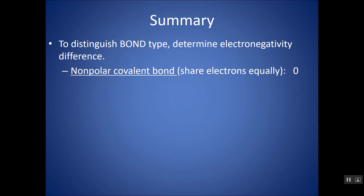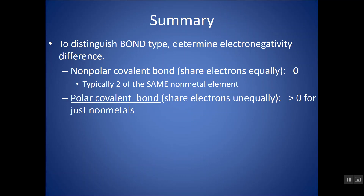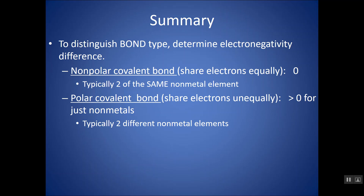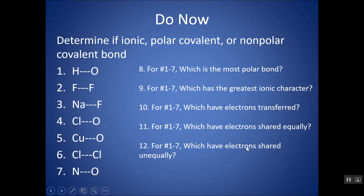In summary, to distinguish bond type, use electronegativity difference. Non-polar means electrons are shared equally; the difference is zero — typically between two of the same non-metal element, like two Cs or two Hs. Remember that C-H is also considered a non-polar bond. Polar is when electrons are shared unequally; the difference in electronegativity is greater than zero — typically two different non-metal elements bonded together. Ionic bond is when electrons are transferred; typically a metal and non-metal, with the difference in electronegativity greater than zero.